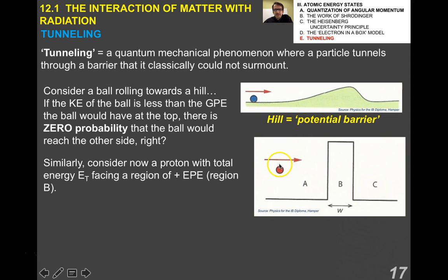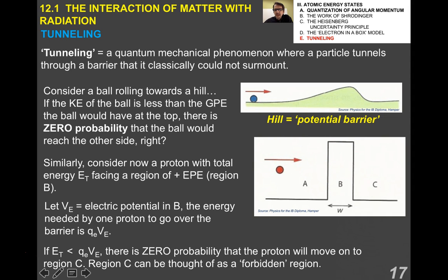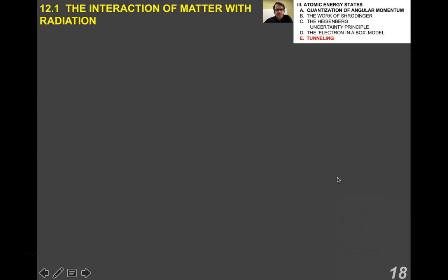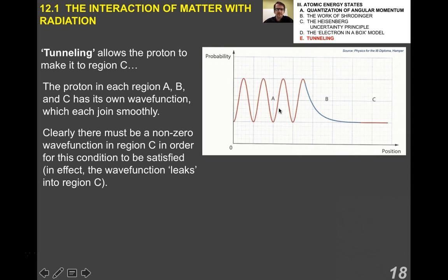There would be a way for the ball to actually get on the other side and it has to do with the probability that it may actually get there. The hill, you can consider it to be a gravitational potential barrier. In the case of quantum, if you think about, say, a proton, which is the red circle here, has the total energy E sub T. It's facing a region of positive electric potential energy, which is region B. If the energy of the proton is less than Q sub E times VE, where VE is the electric potential in B, then there's absolutely no way the proton could get through B and end up in region C. You can think of region C as a forbidden region and region B would be the electric potential barrier.